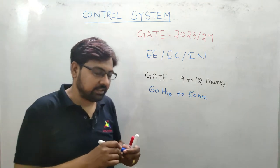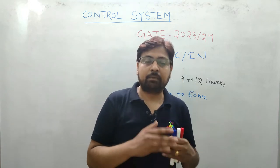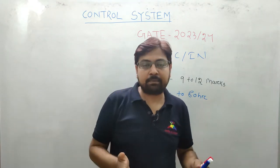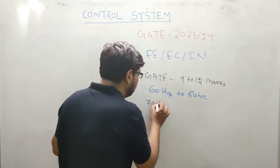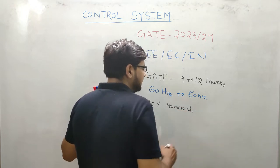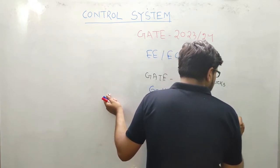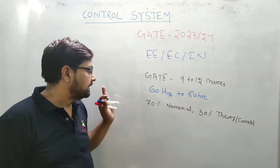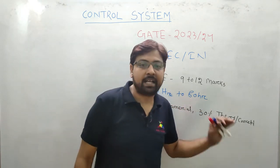उसके बाद हम देखेंगे - similarly जैसे Network Theory में हम ज्यादा से ज्यादा numerical देख रहे थे, यहाँ पर भी Control System में हम लोग 70% numerical के ऊपर deal करेंगे. और जो 30% है वो हम deal करेंगे theory और concept के ऊपर. तो GATE के लिए यहाँ 70% numerical आता है और 30% concept आता है.